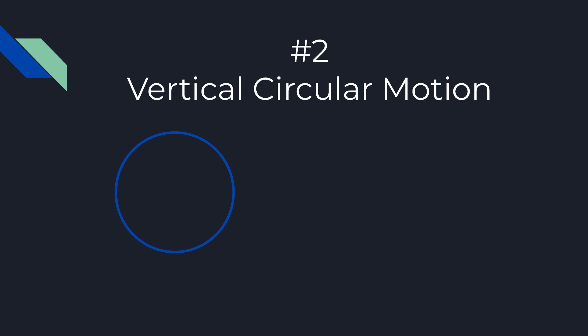So the main equation for centripetal motion is AC equals V squared over R, and you should definitely expect to use this at some point. I'm going to go through the most common problem that you'll see with this — the vertical circular motion problem.